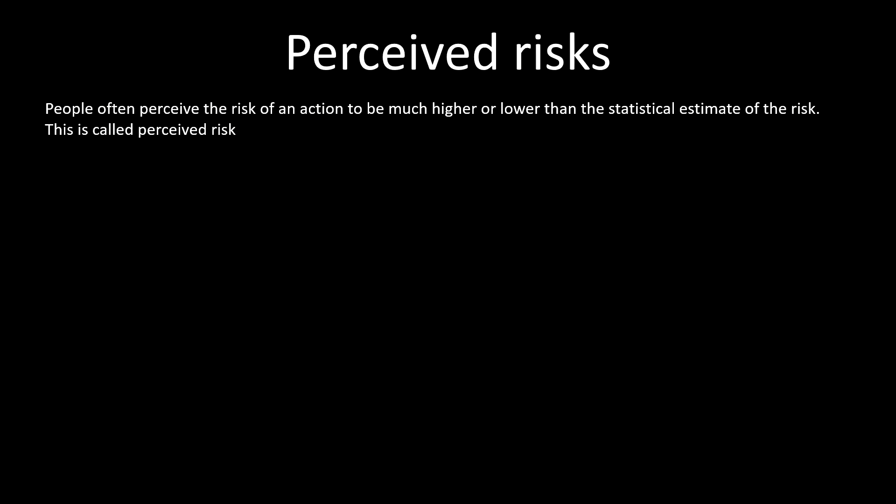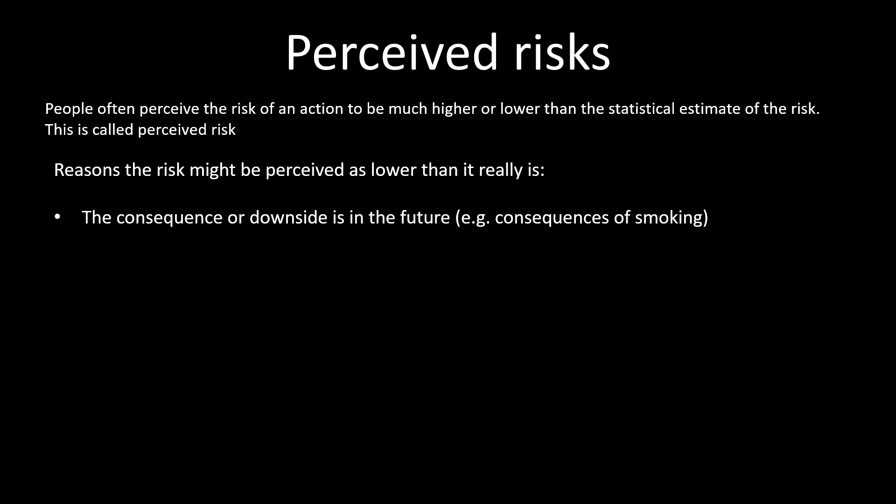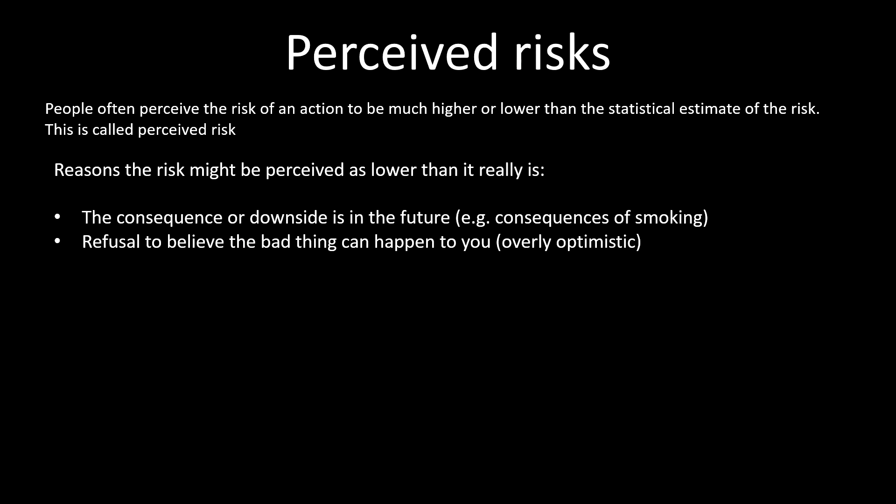Perceived risk is a very important idea that gets asked about a lot. People can have a much higher or lower estimate of risk than the real statistical estimate. Reasons for a lower perceived risk: if the consequence is in the future — smoking is one example. People get an immediate benefit from smoking if they enjoy it, while the increased risk of lung cancer and diseases like emphysema is further down the line, so people are more prepared to take that risk. Some people are also overly optimistic and refuse to believe bad things can happen to them.